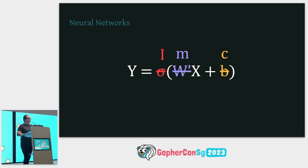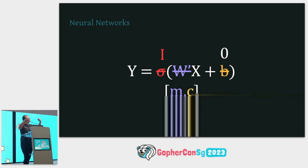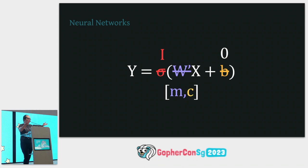If we were to replace sigma with the identity function and M with W and C with B, we get the same thing — we consider C to be a constant 1 in X, due to matrix notation. Really, B is like C but acting at a dataset level. The key takeaway is that weights and biases represent the knowledge of your data, just like M and C.